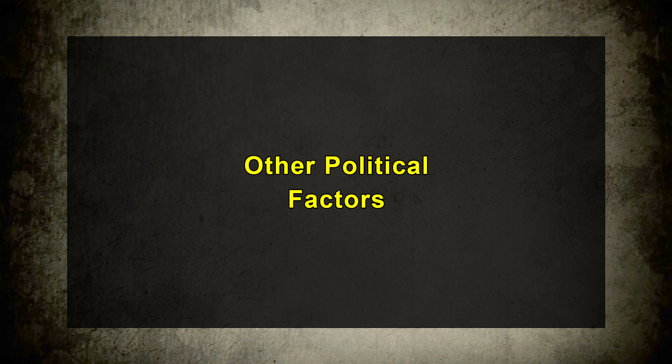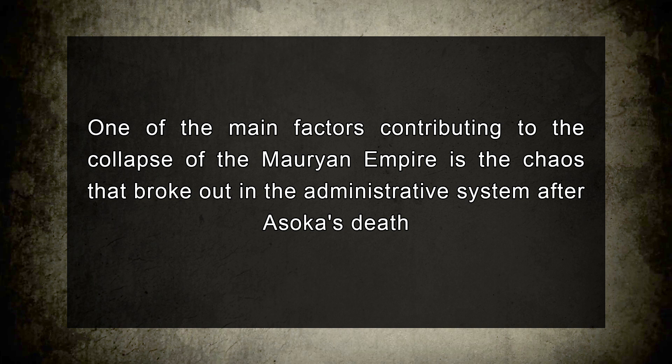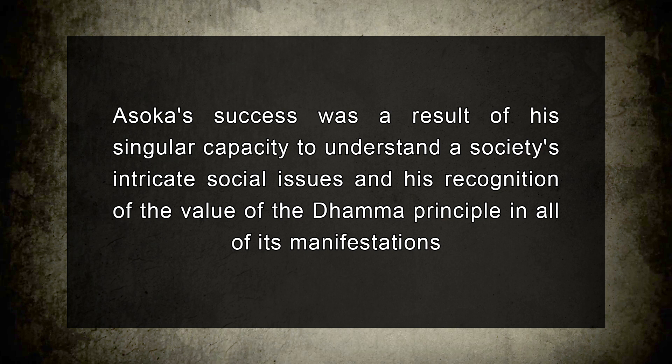The partition of the empire proves that the disintegration process started right after Ashoka's death. One of the main factors contributing to the collapse of the Mauryan Empire is believed to have been the chaos that broke out in the administrative system after Ashoka's death. Whether to carry on Ashoka's Dhamma policy and its predominance in administration was the urgent concern for his successors. It was difficult to understand how government operated under this totally novel type of rule.